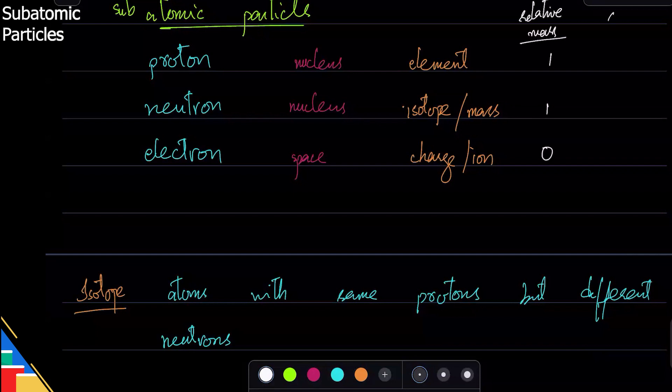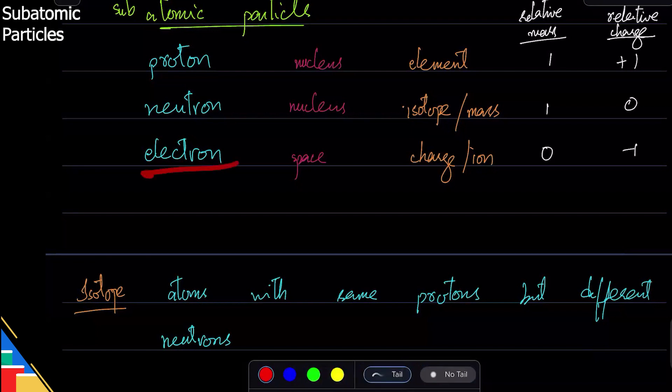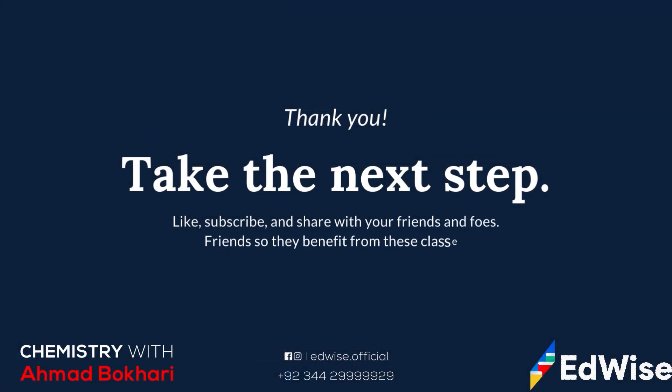Similarly, relative charge. Relative charge of proton is plus 1, for neutron is 0 because it's neutron, and for electron is minus 1. So this tells us that electron and proton have same charge except opposite to each other. But the mass of proton and neutron is roughly the same. So they help us identify the total mass of an atom.